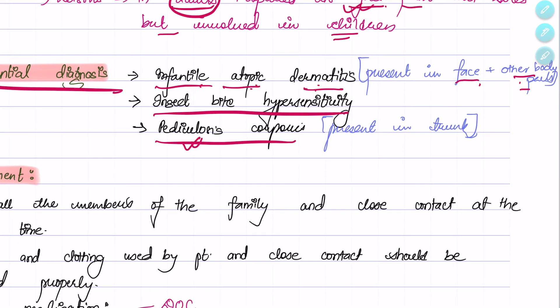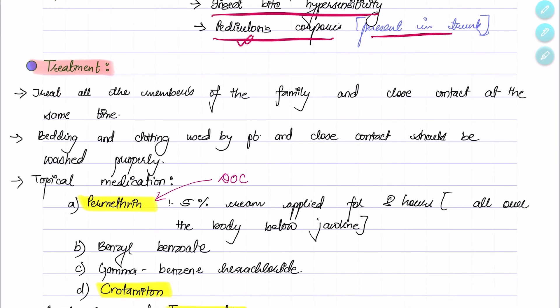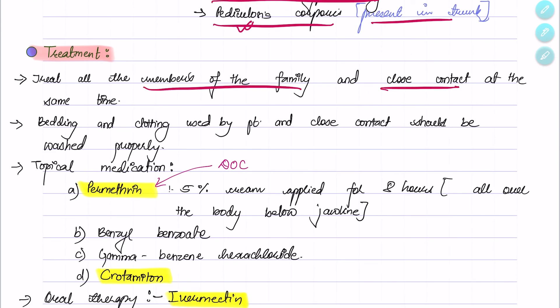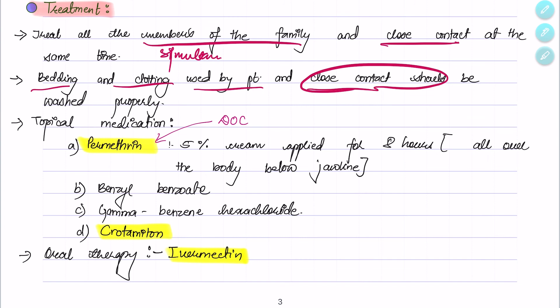For treatment, all members of the family and close contacts are treated simultaneously. The bedding used by the patient as well as close contacts should be washed properly. The medications used for treatment can be topical or oral therapy. Topical medications include permethrin, benzyl benzoate, gamma benzene hexachloride, and crotamiton, which is antipruritic.